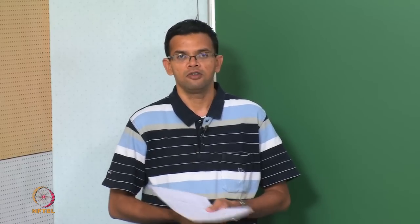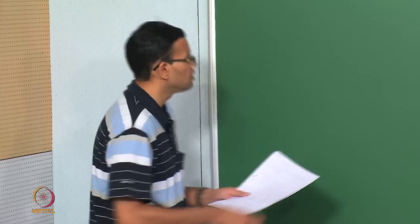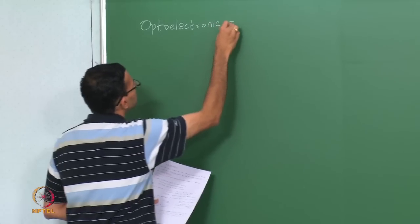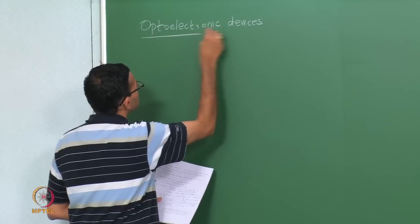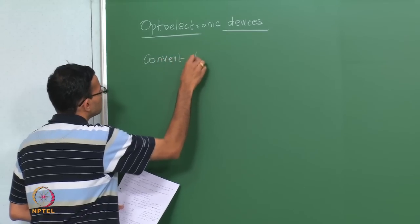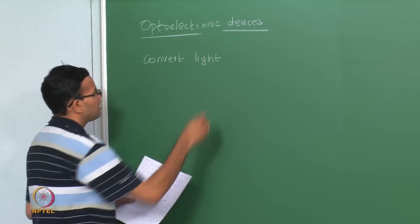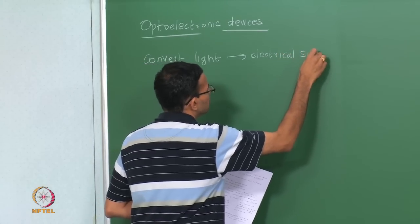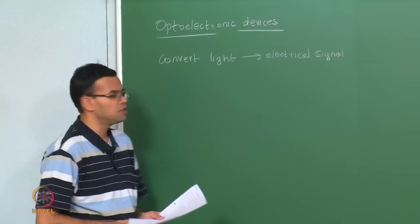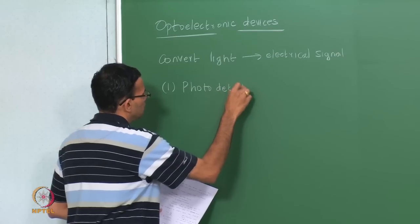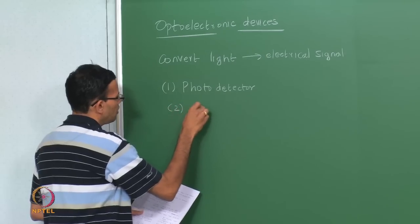Now we are going to look at a different class of devices where we shine light onto the device and then measure the electric current. So we are still looking at optoelectronic devices, but we are looking at devices that convert light into an electrical signal. We are going to look at two such devices: the first one is a photo detector, and then later we are going to look at a solar cell.